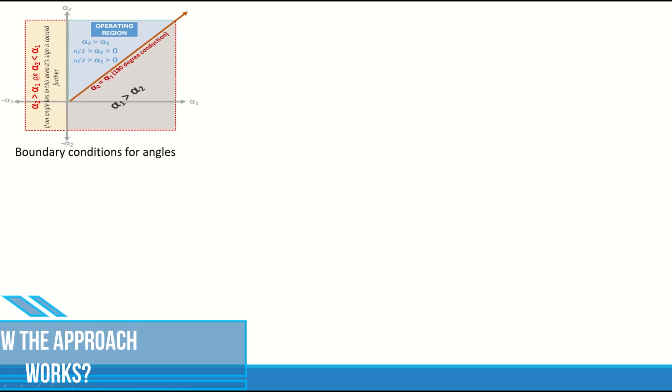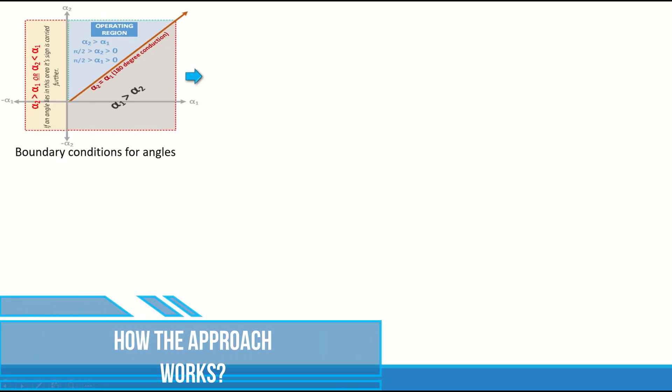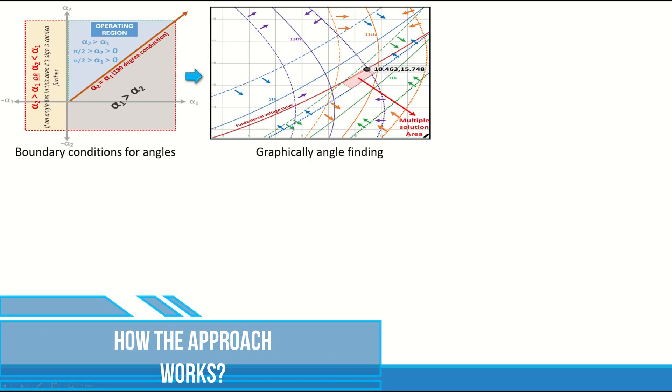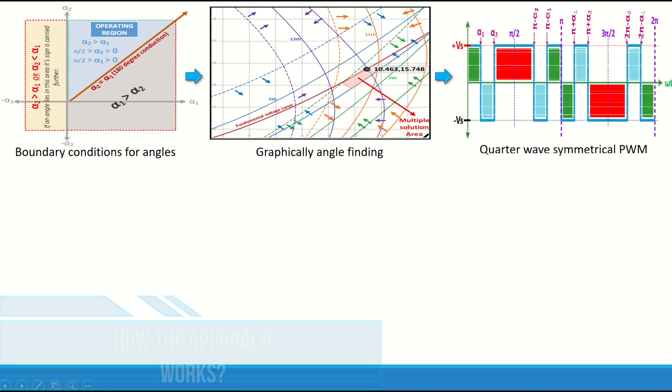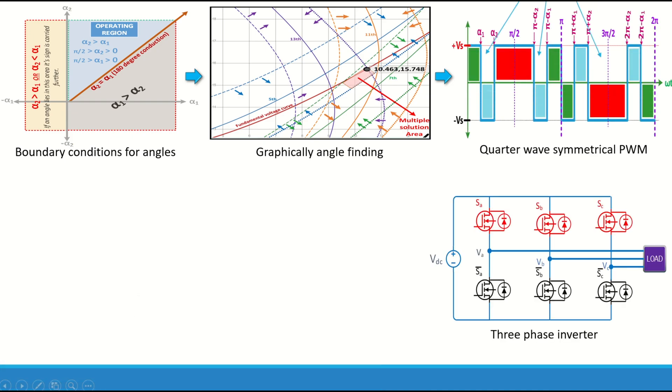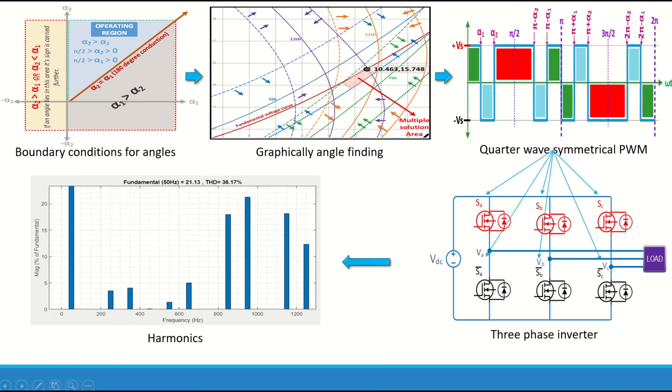Selective harmonic elimination eliminates completely n harmonics using n plus 1 switching, whereas selective harmonic mitigation mitigates more than n harmonics fulfilling specific grid codes.